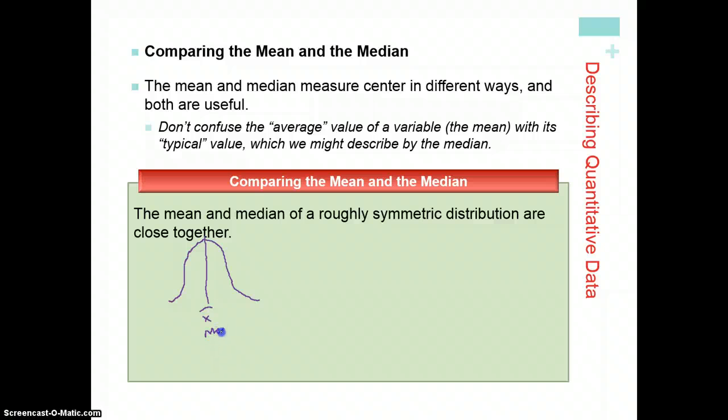If we have a skewed to the right distribution like this, then our median is still in the center, but our mean is going to be drawn this way, depending on the observations. The mean should be greater than the median for a skewed right distribution.